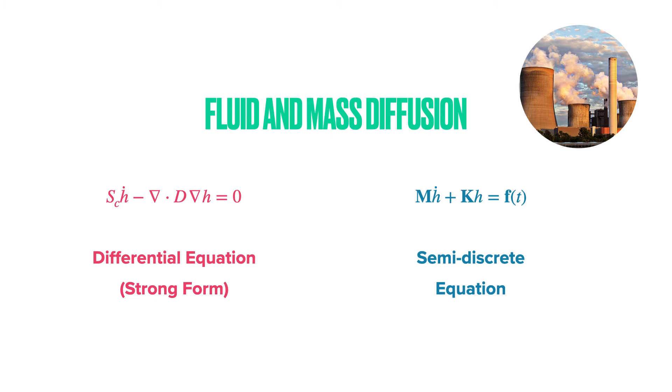Here is the semi-discrete equation for fluid and mass diffusion. Here SC is the storage capacity, D is the diffusivity, and H is the so-called head or pressure.